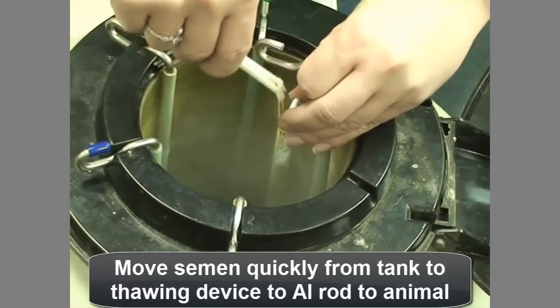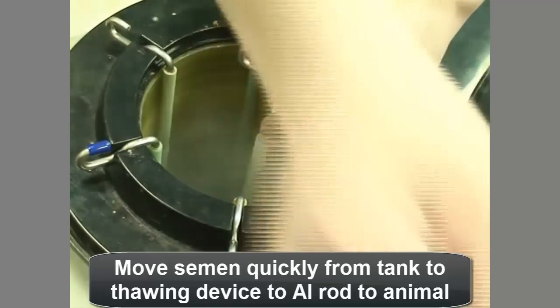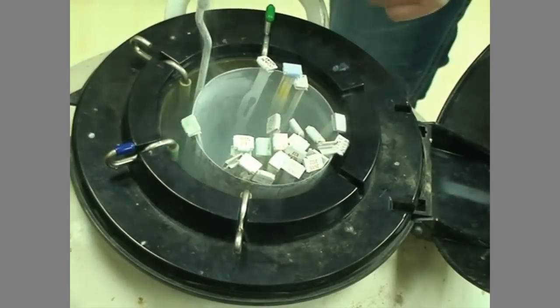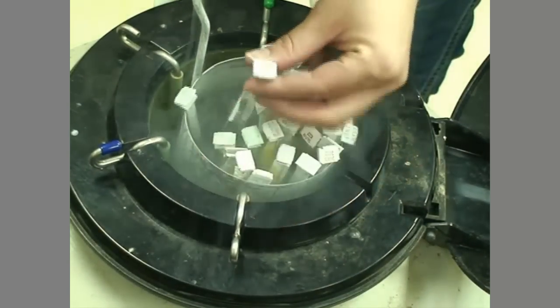From the center position in the tank, raise the desired canister just high enough in the tank neck to grasp the needed cane of semen. Immediately lower the canister to the tank floor.